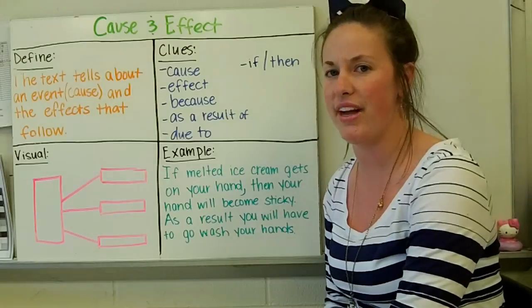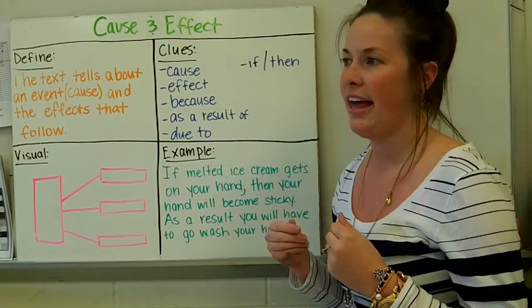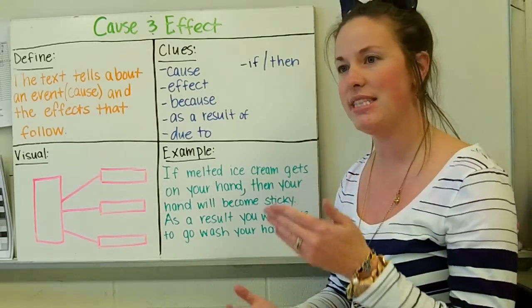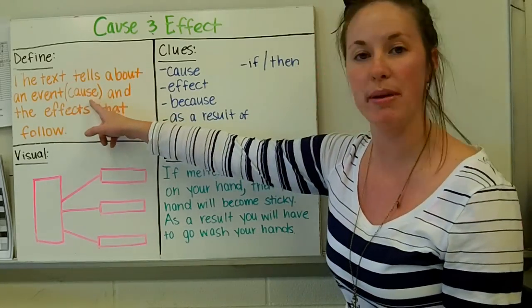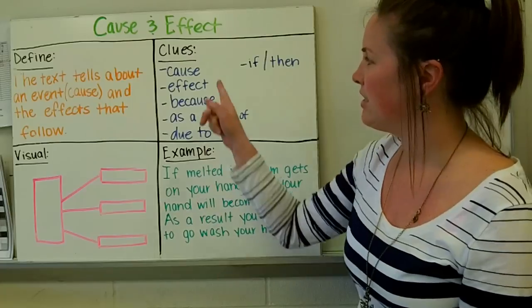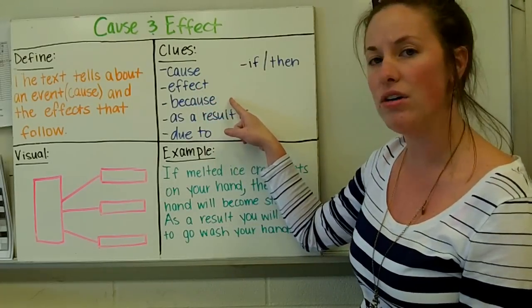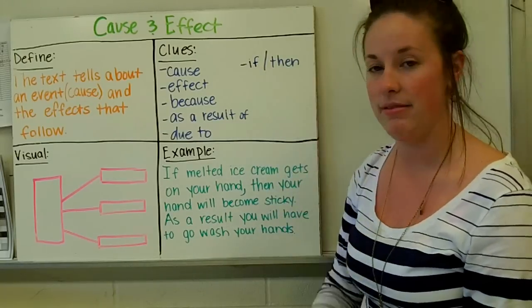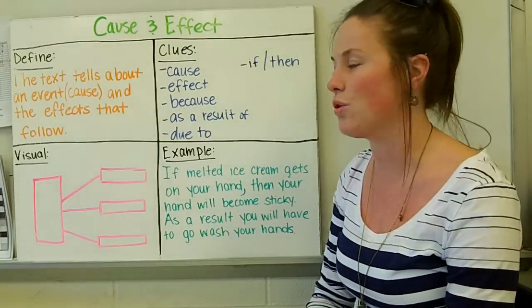The next one we're going to talk about is cause and effect. And we're all very familiar with cause and effect. But this is the structure that completely talks about nothing but why something happens and what happens. So the text tells about an event, which would be your cause, and the effects that follow. So some of the clue words you would look for is cause, effect, because, as a result of, due to, if, and then. So those are pretty much the same clue words we would do if we were looking at cause and effect in a story.